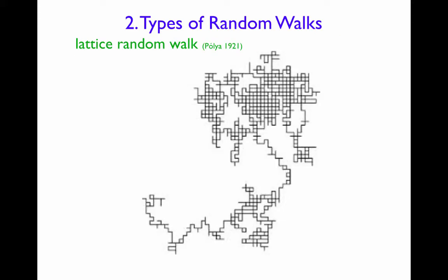Another example is the lattice random walk, in which the random walker is constrained to move between nearest neighbor sites of some regular lattice. So here the steps are a fixed length, and the directions are either north, east, south, or west.